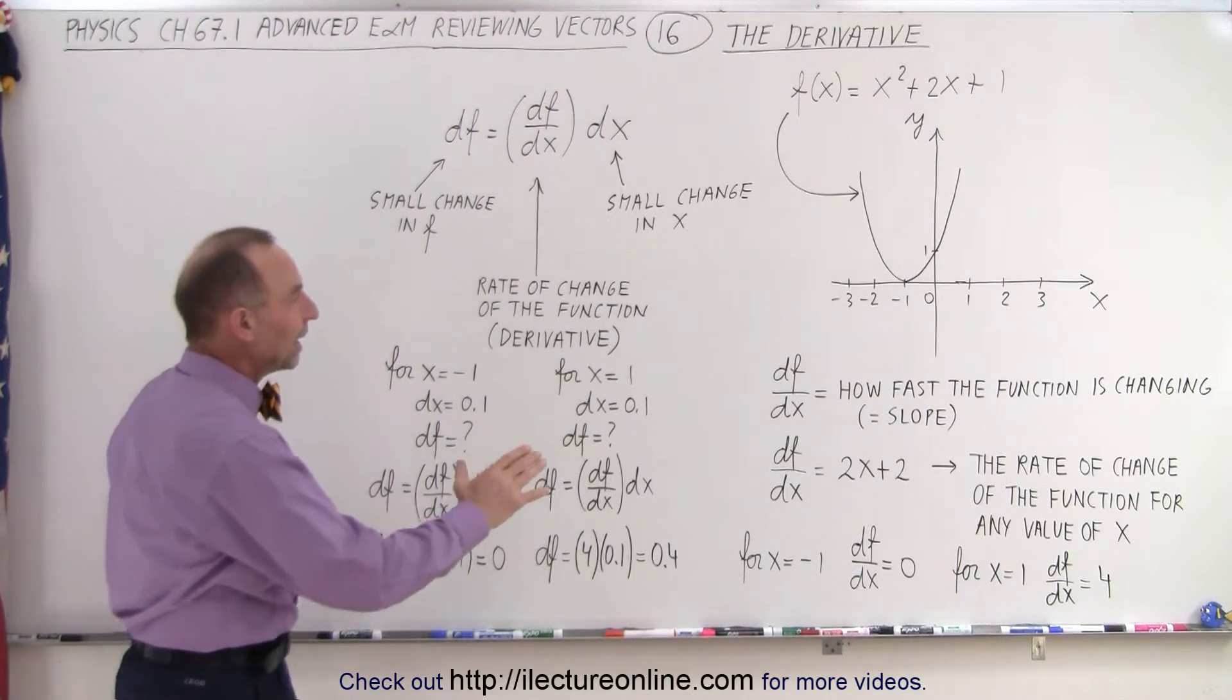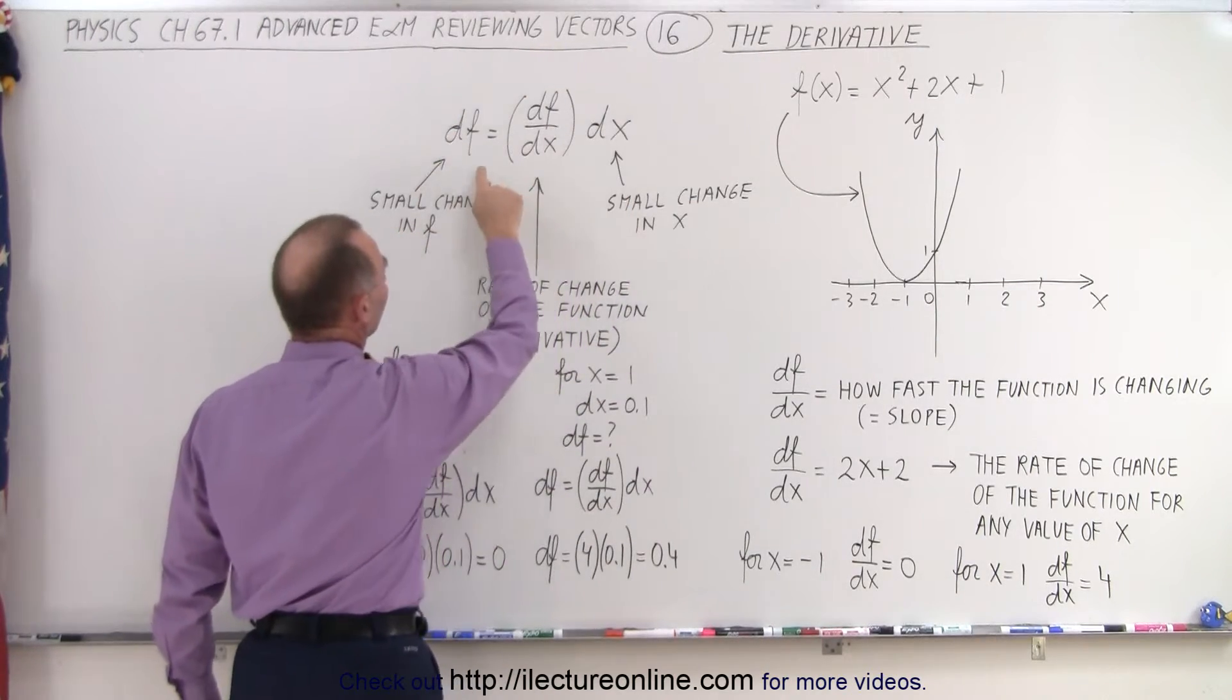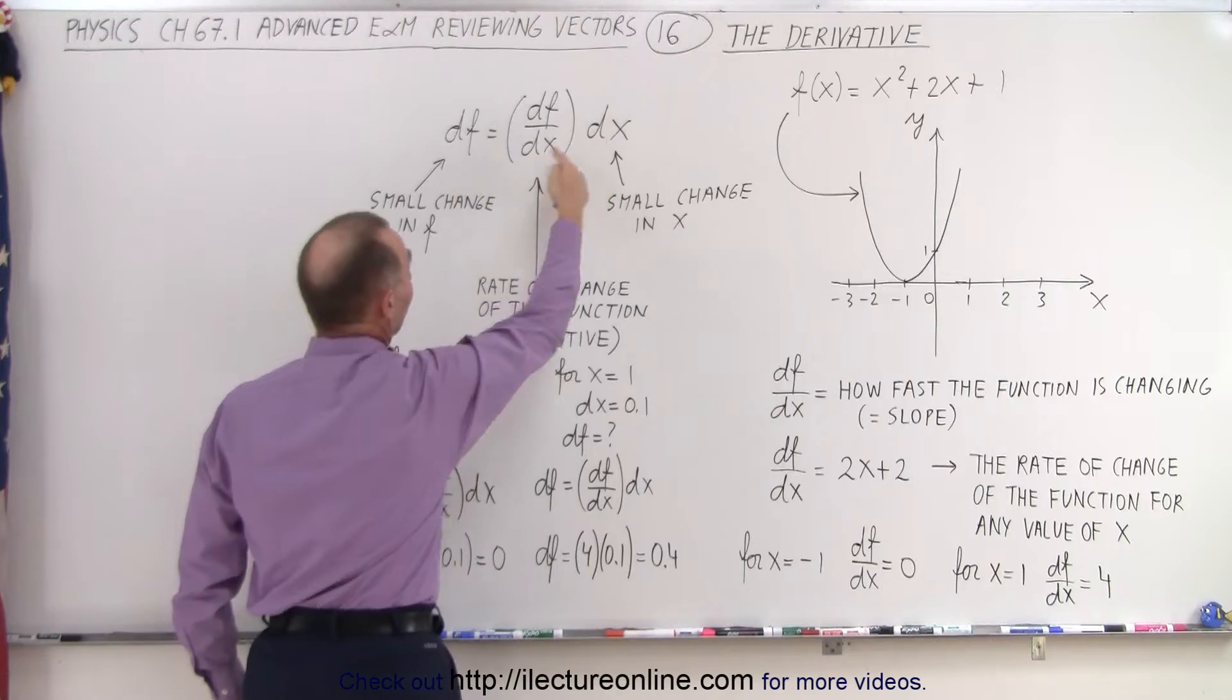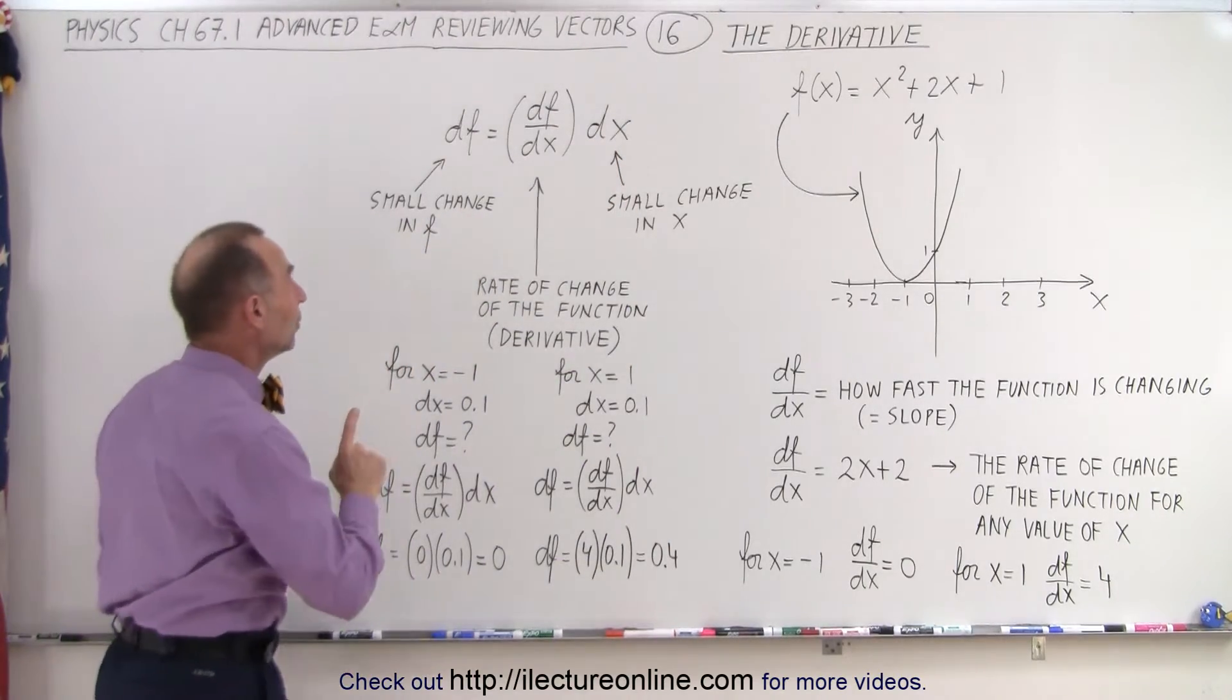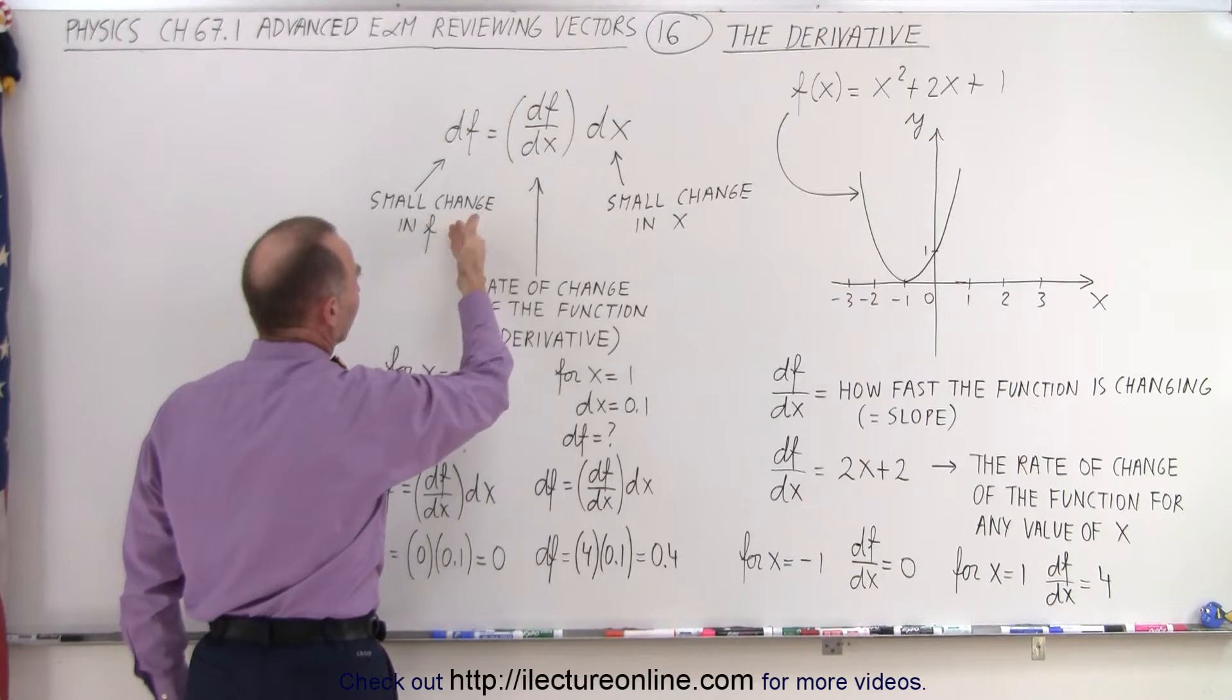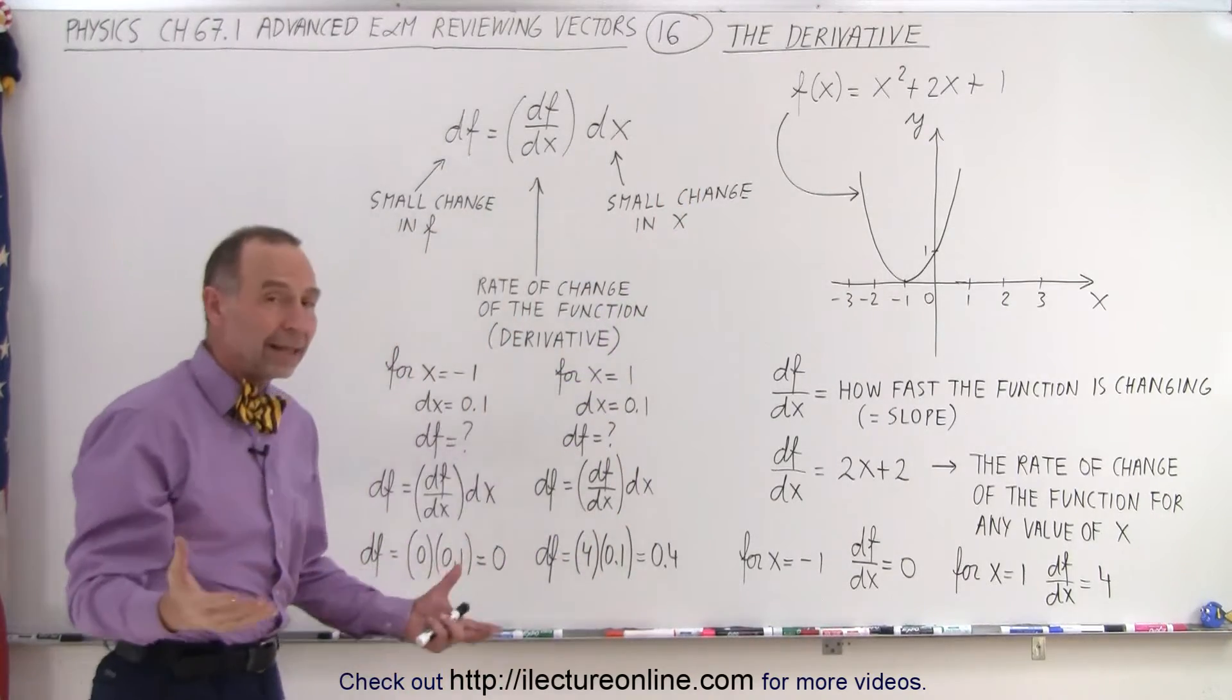We can also take the derivative expression and write it like this. Now, you see that df can be written as equal to df/dx times dx. Notice, when we multiply this out, the dx is cancelled out, and we have df equals df, so we know that's correct. But now, notice that on this side, this is the small change in f. Of course, as delta x goes to 0, there's a small change in x.